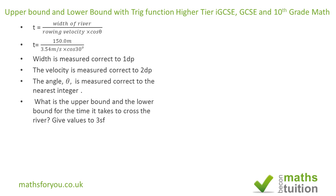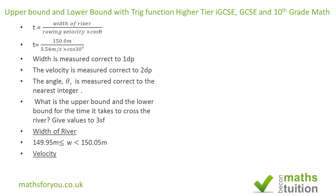If we assign w to the width of the river, then w is greater than or equal to 149.95 meters and less than 150.05 meters. So the upper end is 150.05 and the lower end is 149.95 meters.